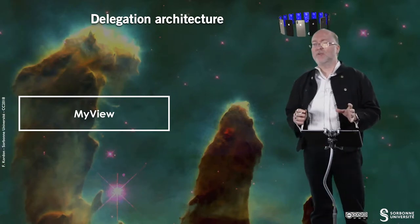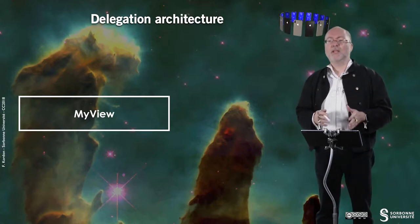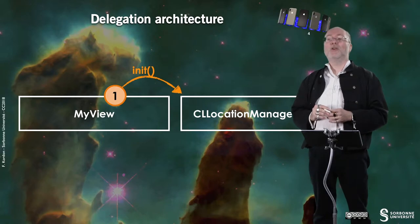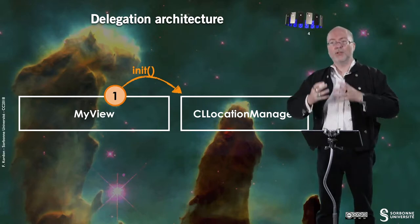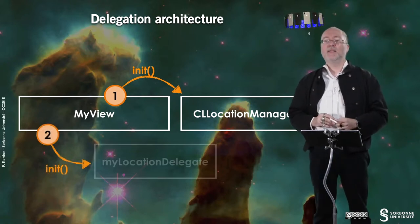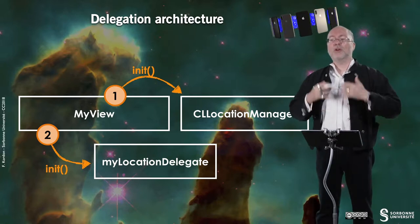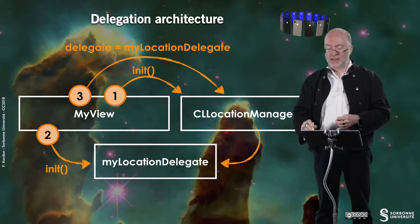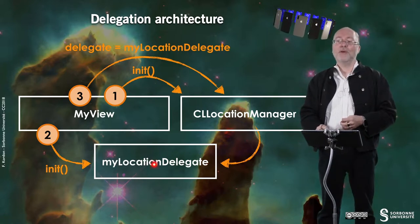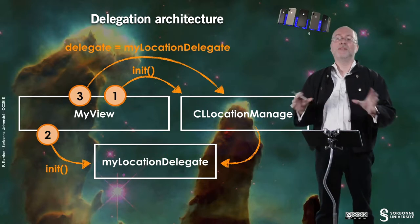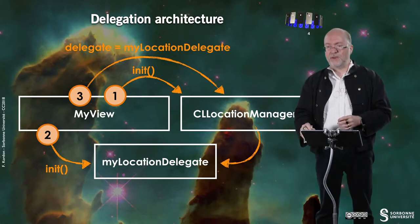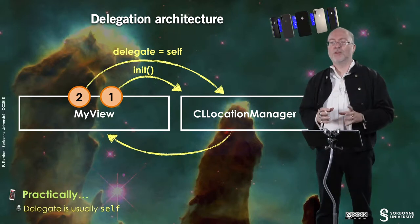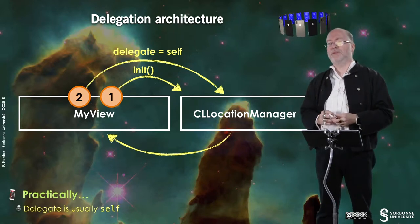Let's have a look at the delegation architecture, which is a bit more complex with this framework. We have a view called MyView. MyView will create a CLLocationManager — the entity handling geolocation for MyView — and it will also create a delegate that handles the associated protocol. It will set the delegate so that the protocol can invoke the methods supported by MyLocationDelegate. Usually, you implement it yourself. This is quite traditional and you're used to this architecture of delegation.